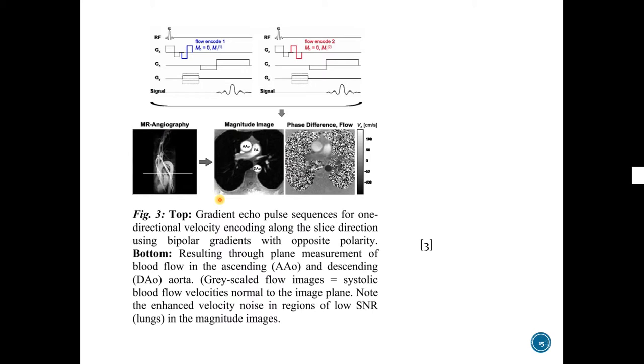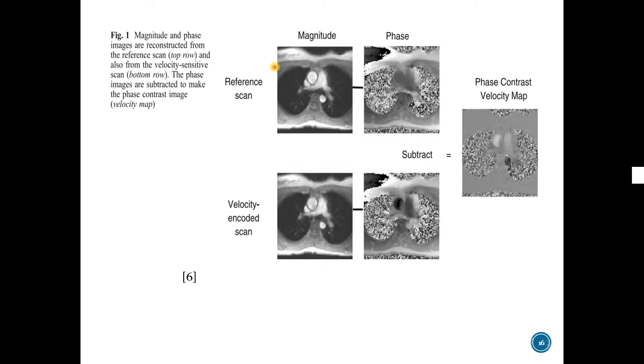Similarly, there is one reference scan and there is one velocity encoding scan. Here, phase images are subtracted and phase contrast velocity map is obtained.